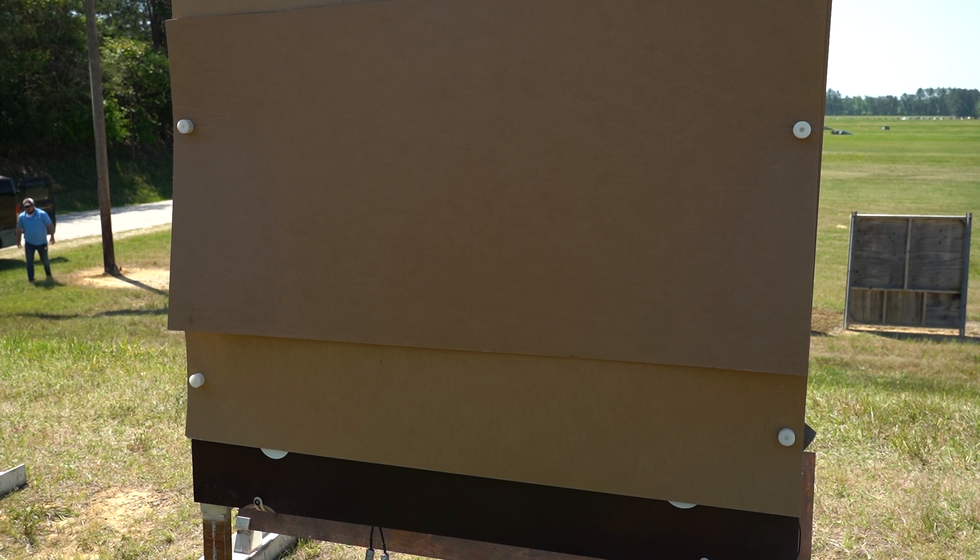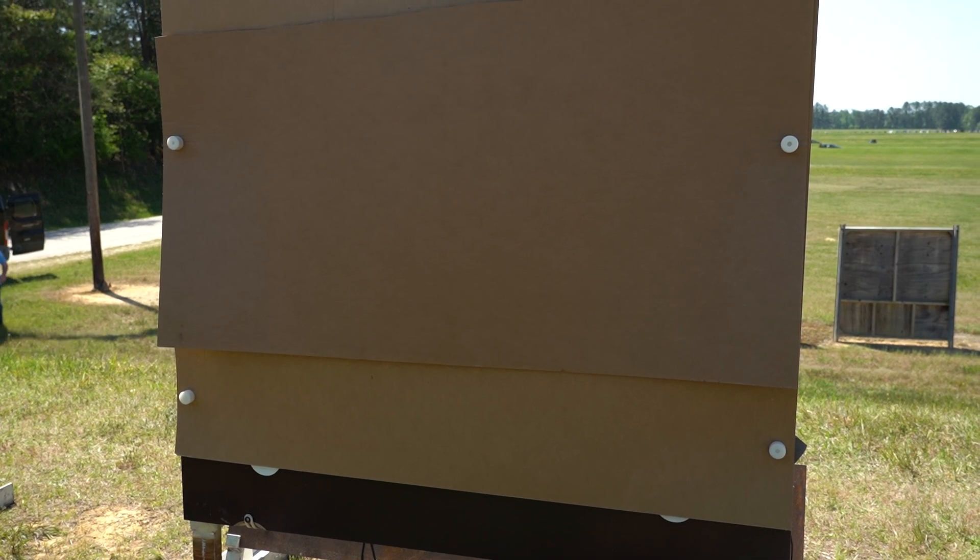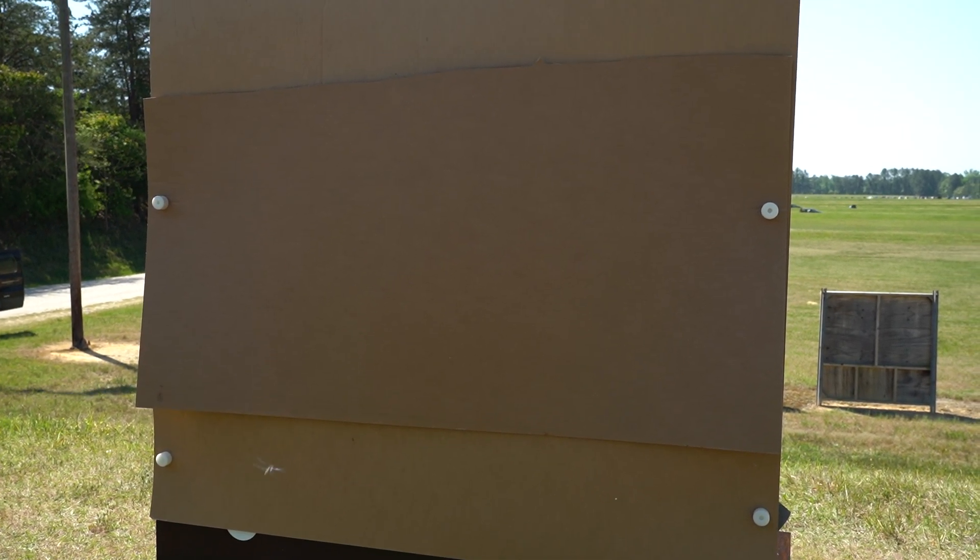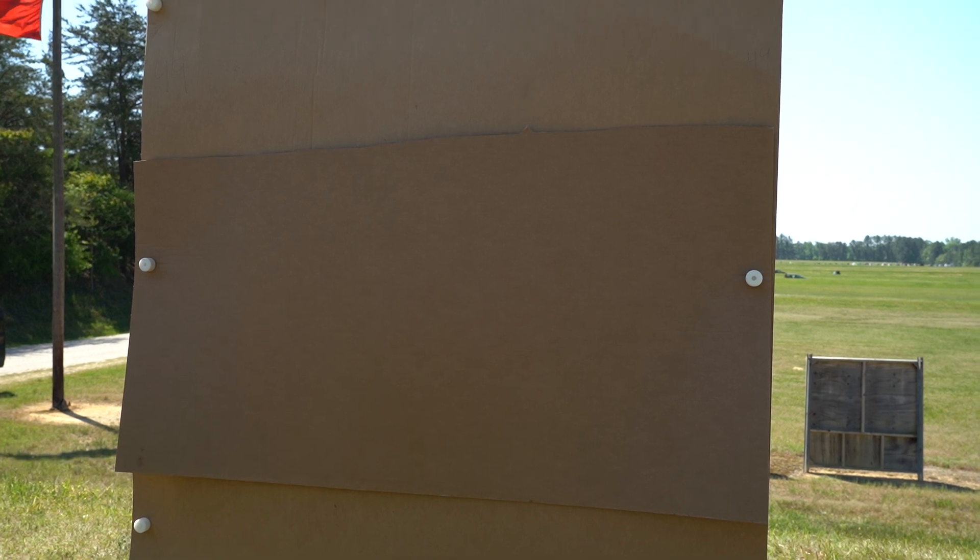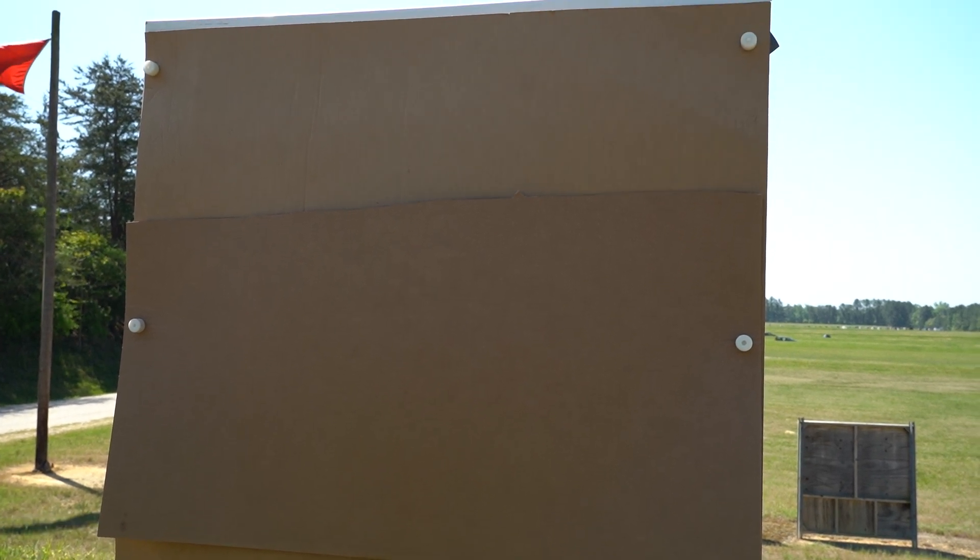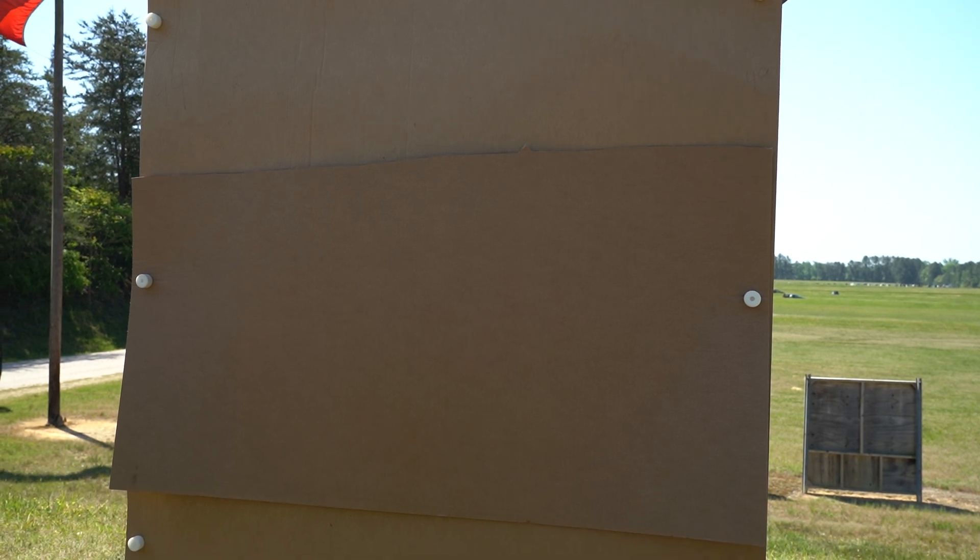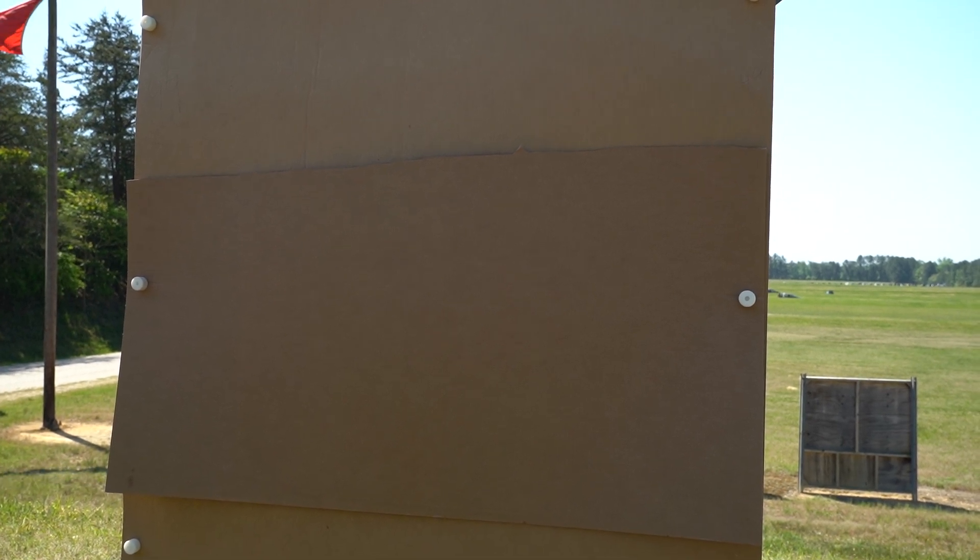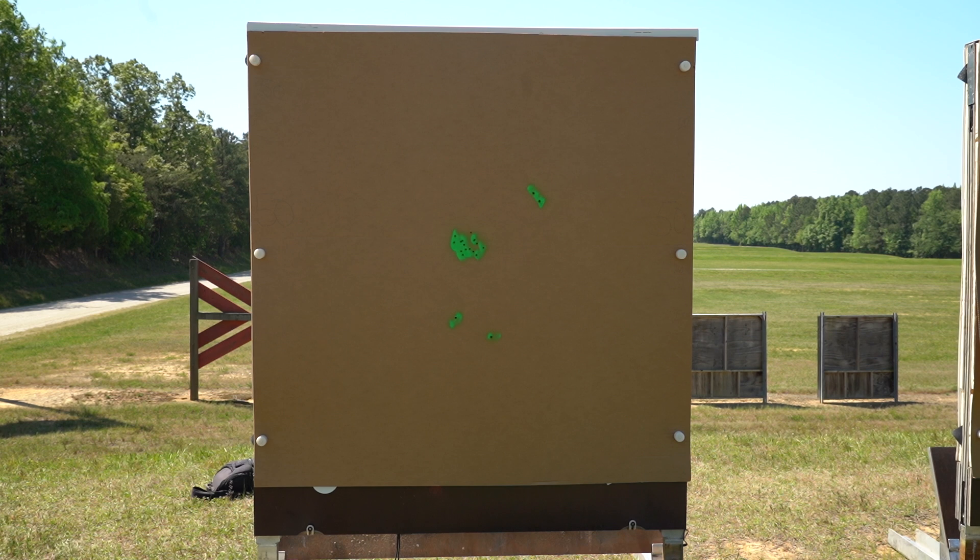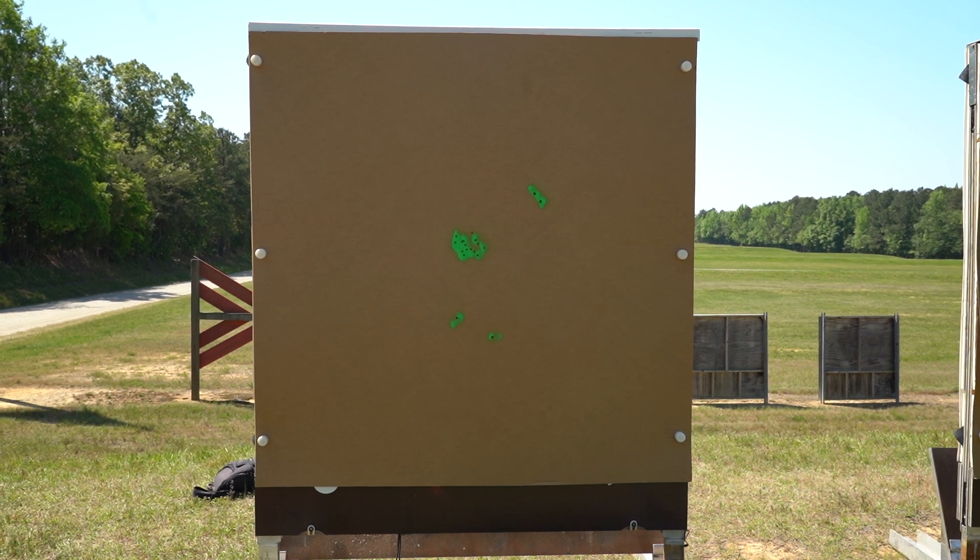On the backs of the targets we put fresh clean cardboard. As the competitors shoot during the day the bullet holes will show up in the back of this cardboard and that gives us a chance to verify in case there's an errant shot we can verify that the bullet actually went through that hole. In between relays or at the end of the day we'll come down and spray paint over the holes that have been shot that day so that we know where the new ones are coming from.